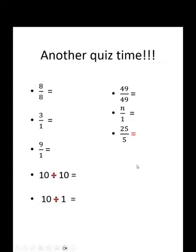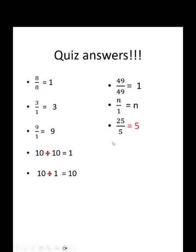Let's mix things up a bit. Put them together. Hit pause. Jot down the answers. Anything divided by itself is 1. Anything divided by 1 is itself. And 25 divided by 5 is 5, because 5 times 5 is 25.